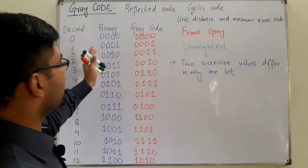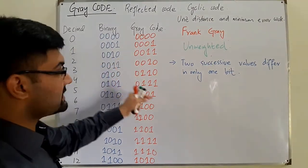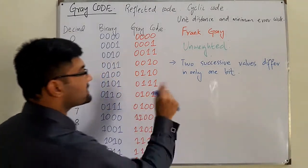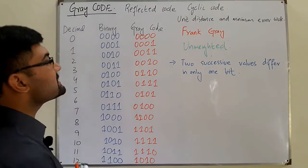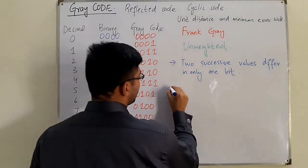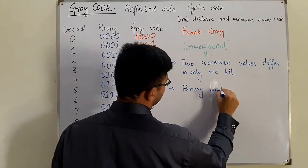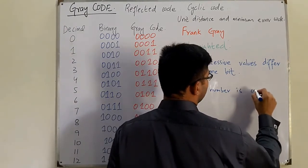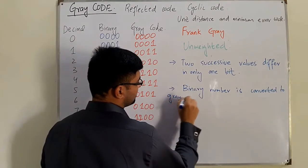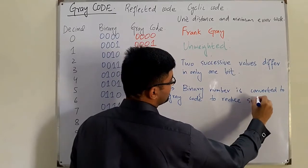We have converted binary to gray code — we'll see that in a moment. This code also has the property to reduce switching operations. A binary number is converted to gray code to reduce switching operations.